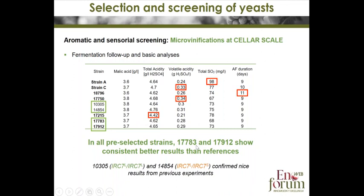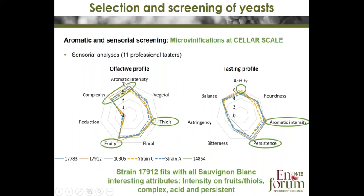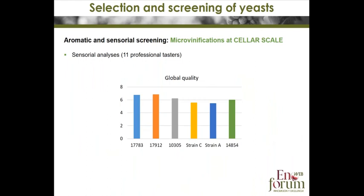The Sauvignon wines made with these strains were evaluated by a tasting panel consisting of 11 professional tasters. One strain scored higher than both references for the Hoser strain in fruity character, complexity, and aromatic intensity in the olfactive profile, and showed an interesting profile for acidity, aromatic intensity, and persistence. This figure of global wine quality confirms that this strain is the best candidate for the next stage of selection.